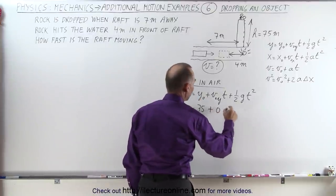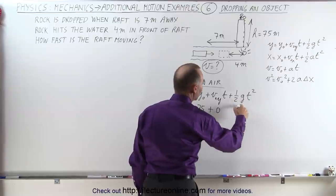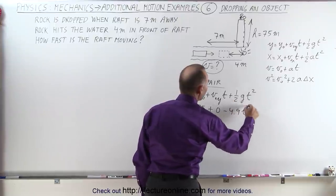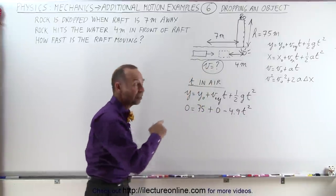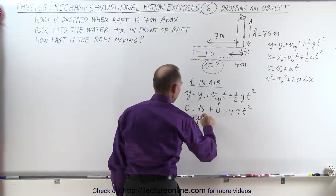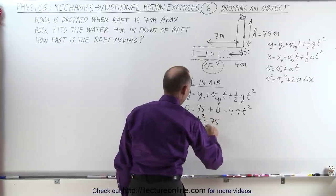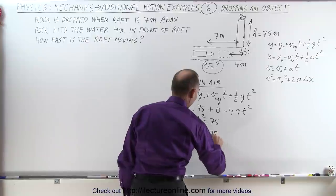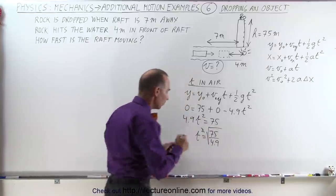So that would be plus 0, and this would be ½ times g, which is -4.9t². So we have to solve this equation for t. We get 4.9t² = 75, or t² = 75 ÷ 4.9, or t is the square root of that.